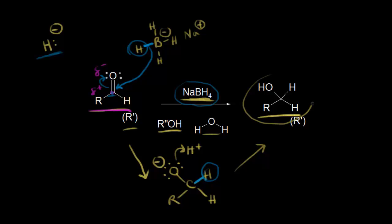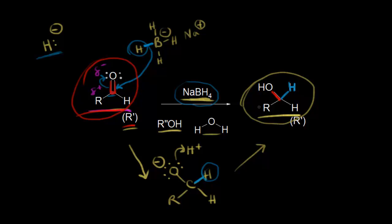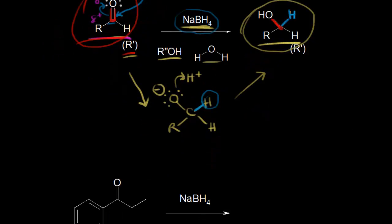The important thing is the formation of your alcohol, by transferring a hydride — a hydrogen and two electrons to the carbon — you're reducing your carbonyl. If we look at this aldehyde or ketone, the carbon has two bonds to oxygen, and by adding a hydride, now the carbon has only one bond to oxygen. If you assign oxidation states, you will see that this carbon has been reduced. The hydride-reducing agents reduce the carbonyl to form an alcohol.